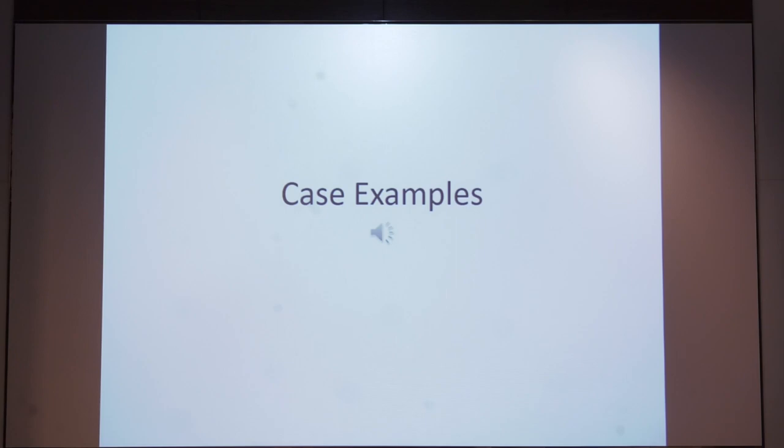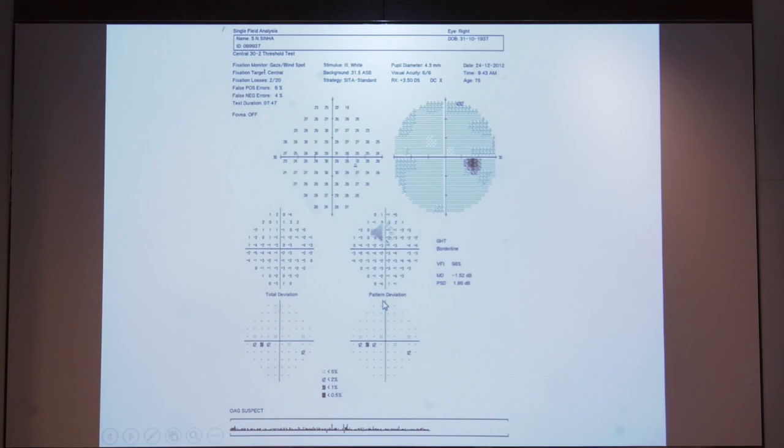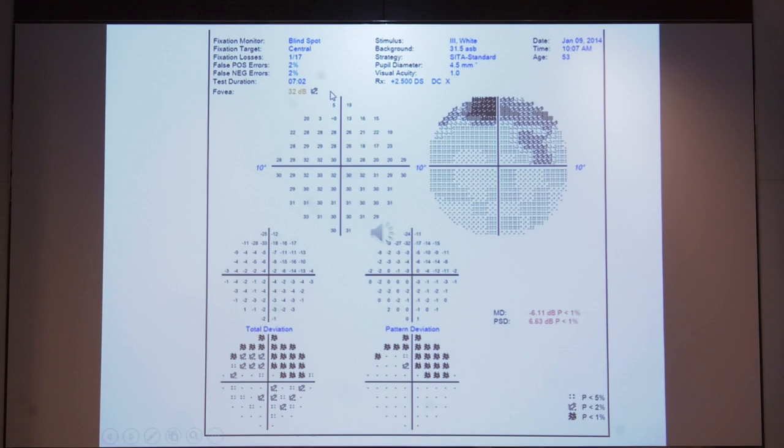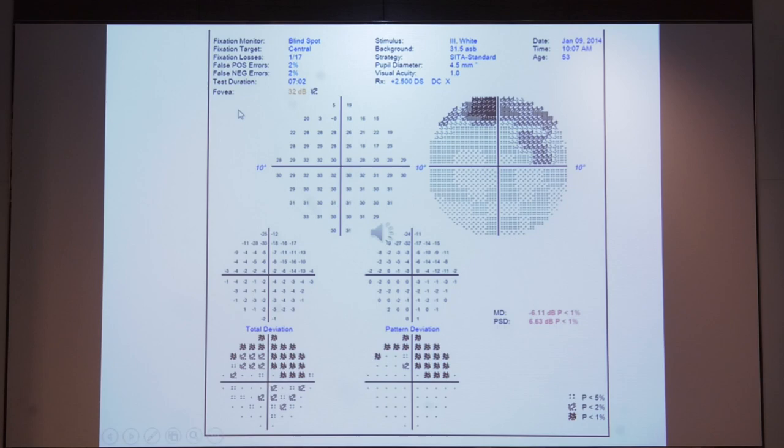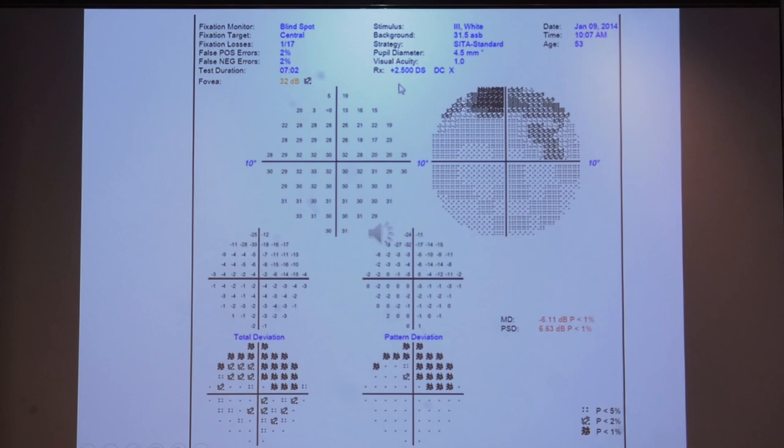Let us see a few examples. This is what a normal Humphrey's printout looks like. Here you can see a field defect in the superior field, which is there both in the total deviation plot as well as the pattern deviation plot. You can observe on top that all the reliability indices seem to be normal. There is also a foveal threshold on top, which is slightly abnormal. Overall, there is a reduced mean deviation and a pattern standard deviation indicative of a field defect. This is almost like a superior arcuate defect.